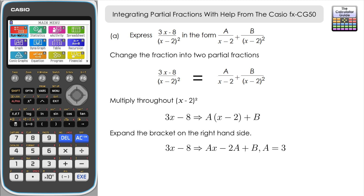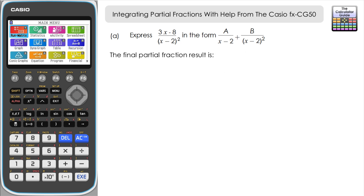Substituting A = 3 back in, we get 3x − 8 = 3x − 6 + B. Comparing the constant terms: −6 + B = −8, so B = −2. We can now write the partial fraction form: (3x − 8) over (x − 2)² equals 3 over (x − 2) minus 2 over (x − 2)², completing part A.